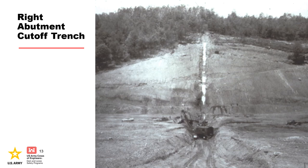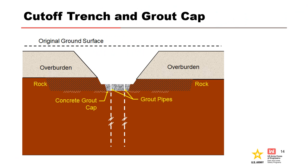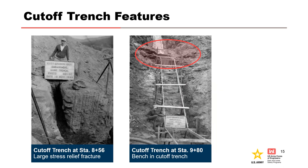Construction of the dam began in June 1947. The narrow cutoff trench was excavated down the right abutment and a short distance across the valley bottom, extending through overburden and into the underlying bedrock. A concrete grout cap was placed in the bottom of the trench, and drilling and grouting of the right abutment was performed through the grout cap. Very large stress relief fractures are present in the rock, as shown in the photo on the left, located very near the incident location. There is also a bench in the abutment and the cutoff trench, which may have been the source of differential settlement and embankment cracking.